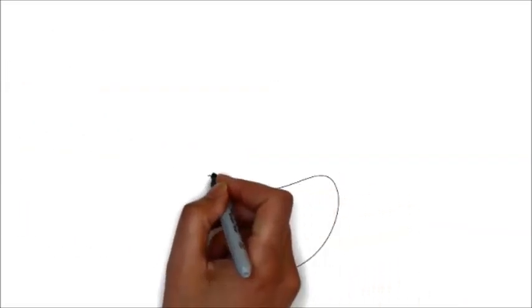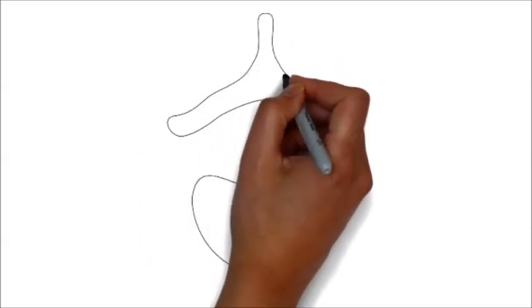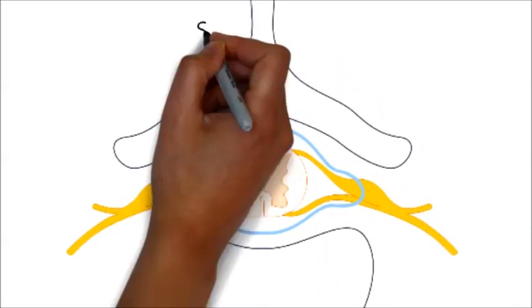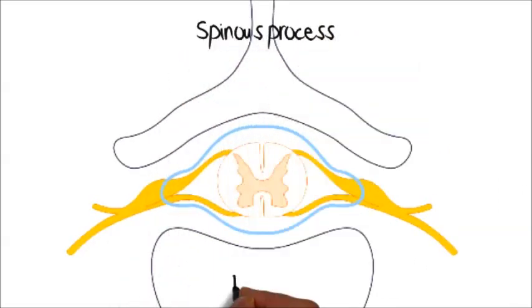Let's place that in the vertebra so you can see its relation and you'll see the spinous process of the vertebra and the body of the vertebra and the spinal cord in the canal.